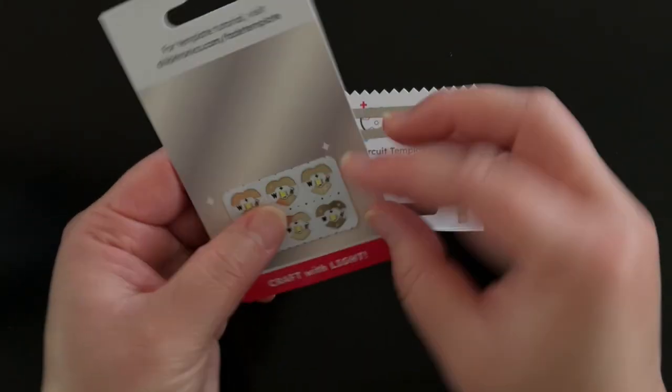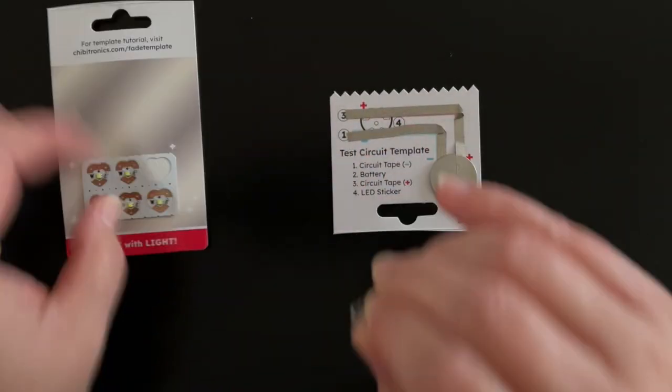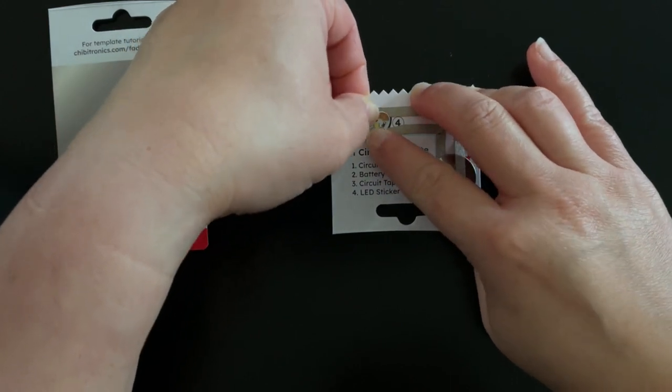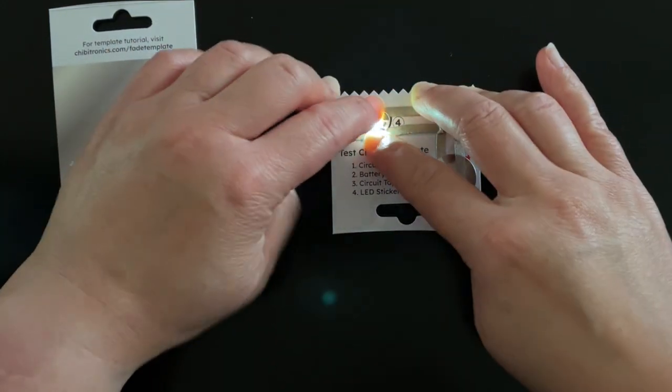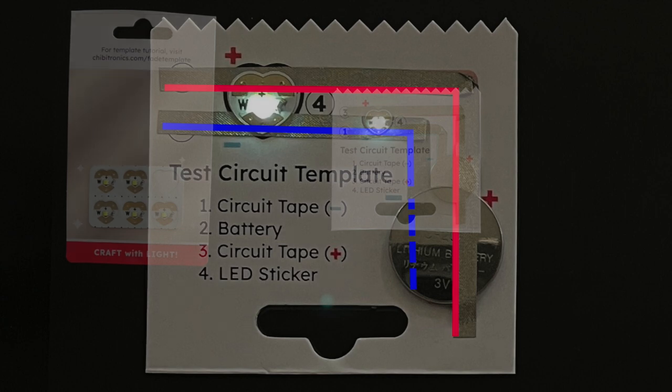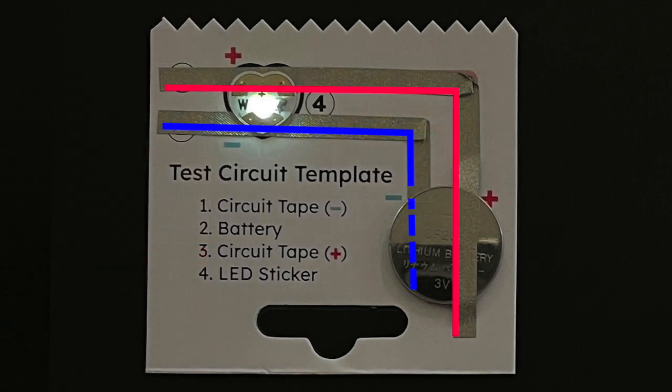Finally, carefully peel the animating LED sticker of your choice off the backing sheet and adhere it to the template. Press firmly to adhere and watch the magic happen. Make sure that the larger positive side of the sticker covers the tape running over the red positive line and the smaller negative point of the sticker covers the tape running over the blue negative line.